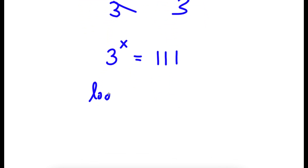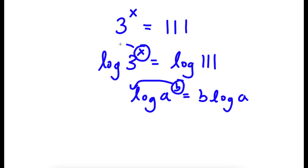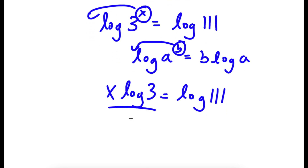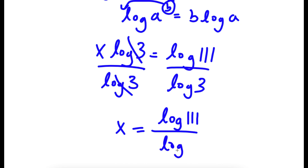Now if I take the log on both sides, I have log 3 to the power of x is equal to log 111. If I have something in the form log a to the power of b, I can move the exponent to the front, so this equals b times log a. So log 3 to the power of x becomes x times log 3 is equal to log 111. Dividing both sides by log 3, I have x is equal to log 111 over log 3.